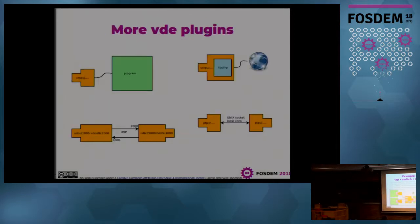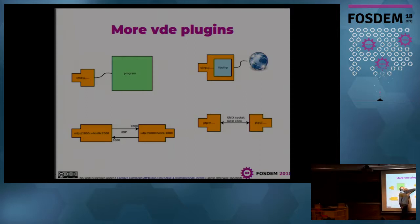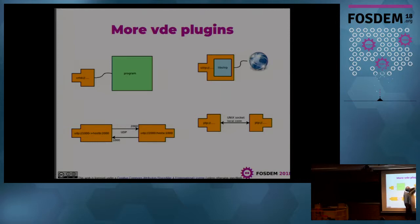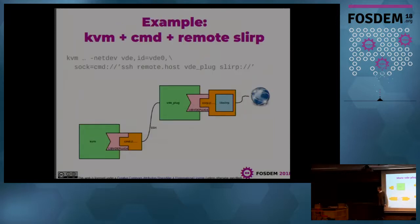We have many more plugins. There is a plugin that feeds input to a program. We have slirp — slirp is a network emulator so using slirp you are connected to the internet, but all the network traffic coming from the virtual world appears to the outside as if it were generated by that process. You can connect your virtual network to the internet as a client without any root access. We also have UDP and Unix sockets.